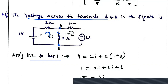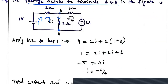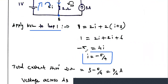KVL states that the sum of voltage rises equals the sum of voltage drops. In loop 1, going from minus to plus gives a voltage rise of 1 volt, equal to the voltage drop: 2 times I, plus 2 times (I + 3). Expanding: 2I plus 2 into 3 gives 6, so we get 4I. Moving 6 to the other side gives minus 5, so 4I equals minus 5.